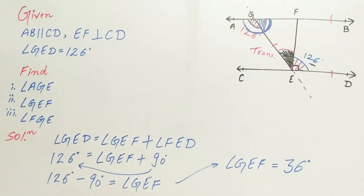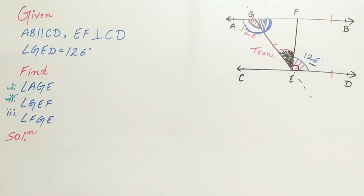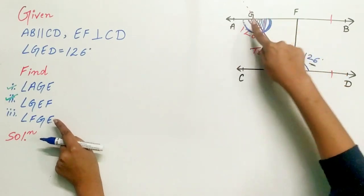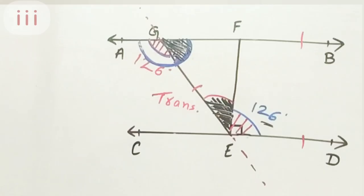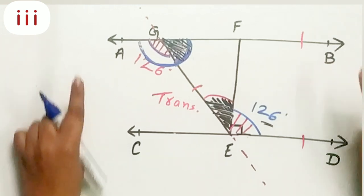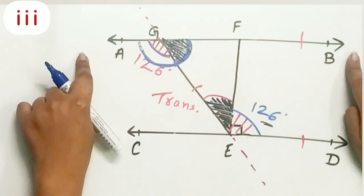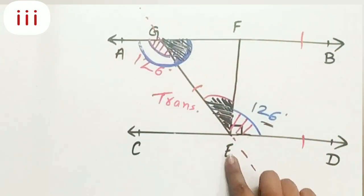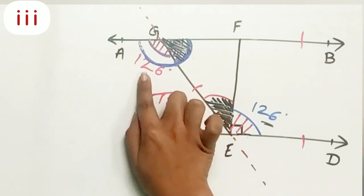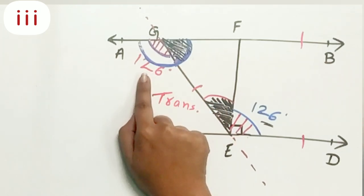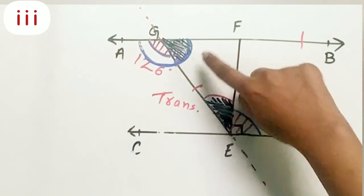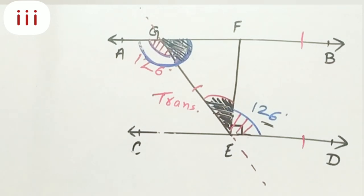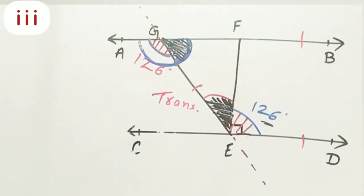Now let's move to our third part. We have to find angle FGE. Now try to understand, AB is a line, and angle AGE and angle FGE form a linear pair. We have already found the value of angle AGE. Can we find the value of FGE? Yes, so let's do it.